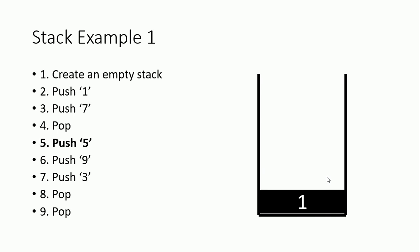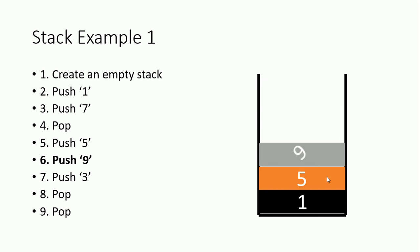Step five is push five. Since seven is already gone, we add number five. Step six is push nine — we add number nine. Step seven is push three. Step eight is pop — we always remove the topmost value, which is the last in, so that's why it's called LIFO, last in first out. Executing pop removes number three.